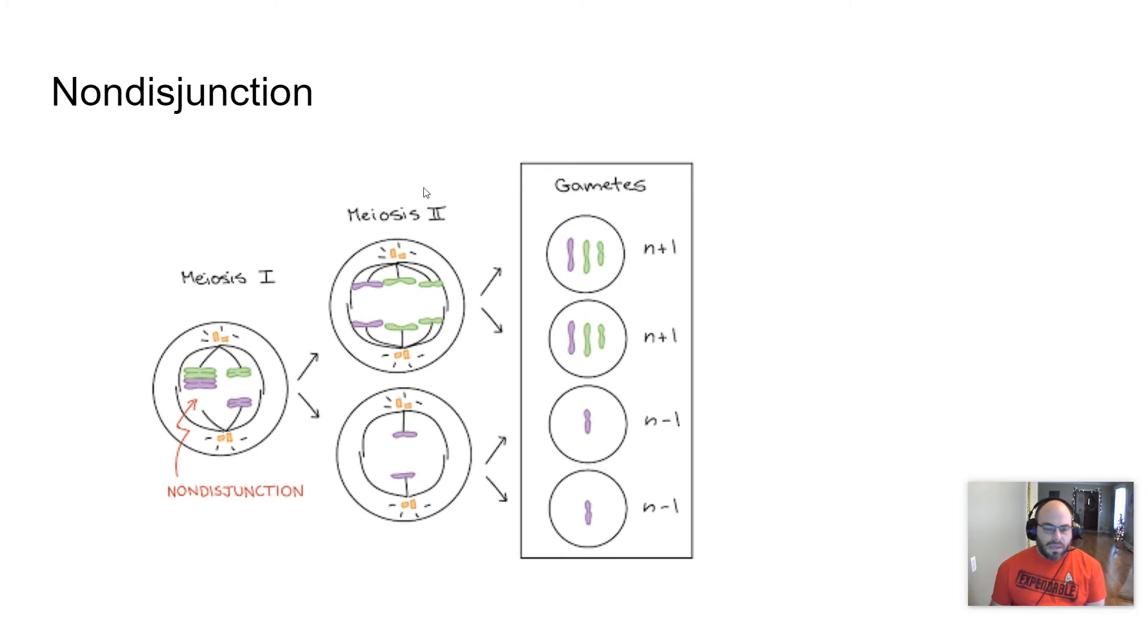Typically you'll see this expressed as if nondisjunction happens in meiosis 1, all four gametes will be broken. And you'll have n plus 1, which is a haploid plus an additional chromosome. And you'll have some that are n minus 1, a haploid minus the chromosome that it should have. See, what's happening here is green and purple should have separated here, but they didn't. And green and purple all went one direction. And so this cell got all of them. And this cell didn't get any green or didn't get any of the big purple. And so that had an effect on all the big chromosomes are up here and none of the big chromosomes are down here.